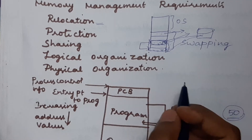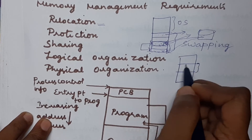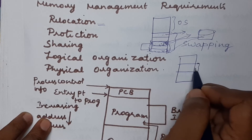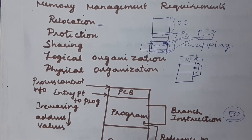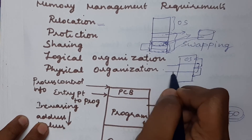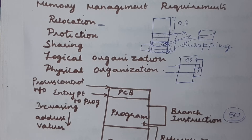If you look at this, we have one program and its size occupies a particular block. That particular program may not have access to other programs or even the OS program. We need to determine what the base address and limit value of that particular program are — the limit represents the size of the program, and the base address represents the starting address. We use two registers to hold these values: a base register and a limit register.